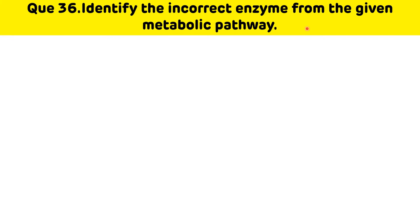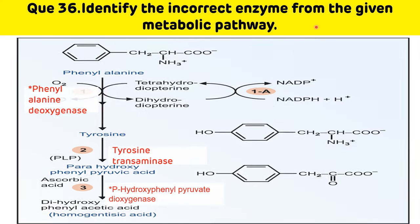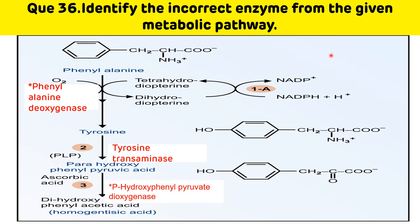Identify the incorrect enzyme from the given metabolic pathway. This metabolic pathway is associated with the breakdown of phenylalanine and tyrosine. Phenylalanine is converted to tyrosine, tyrosine is converted to para-hydroxyphenylpyruvic acid, and that is converted to homogentisic acid. The incorrect enzyme shown is phenylalanine dioxygenase — the correct enzyme is phenylalanine hydroxylase.